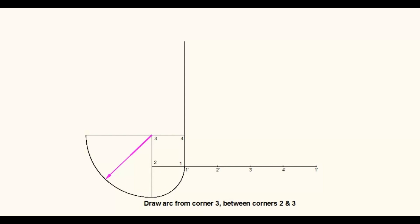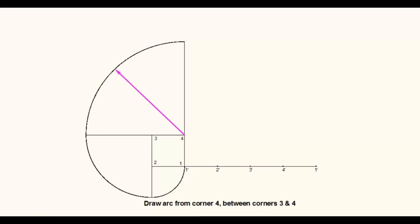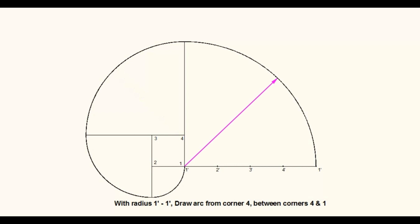Measure the distance of 1-dash to 4-dash on the horizontal line. With corner point 4 as center, draw an arc between edges 3 and 4. Finally, with radius 1-dash to 1-dash, draw an arc between edges 4 and 1. Thus the construction of the involute of a square is complete.